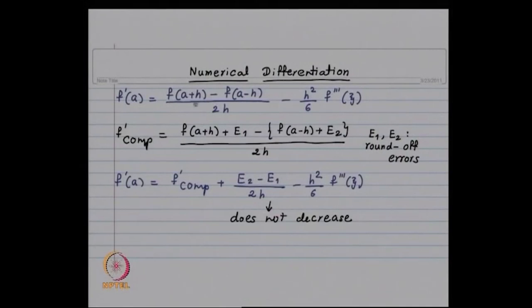This phenomenon occurs because the computations we do are done in finite precision. A number is represented on a computer and there is some round-off error. This problem does not come into picture when we consider numerical integration. I want to quickly explain the difference between numerical differentiation and numerical integration using a composite rule, for the first derivative f'(a), looking at the central difference formula.